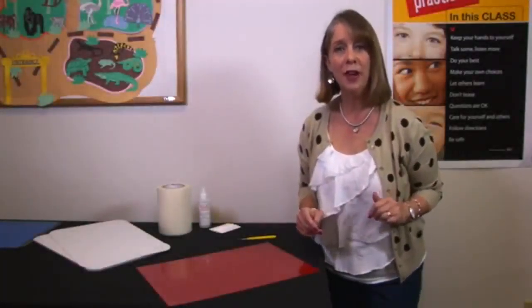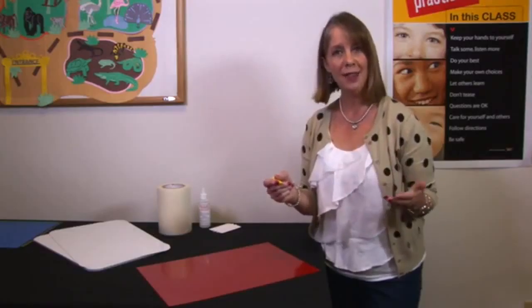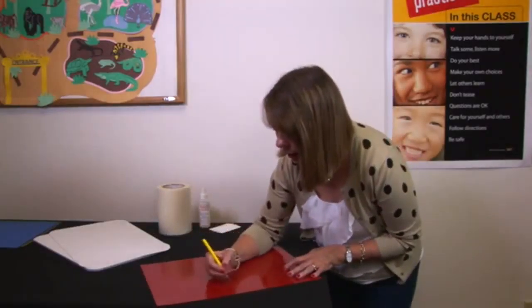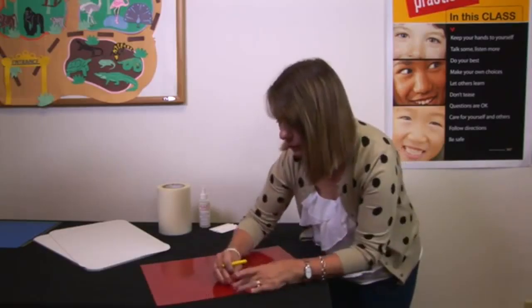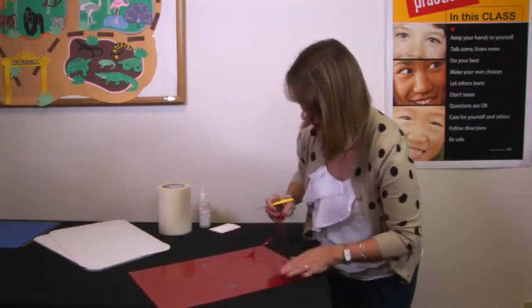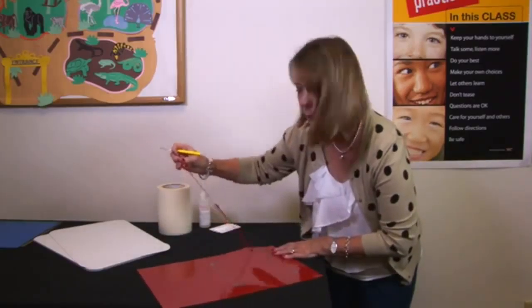The first step to applying the vinyl to a sign is to take your weeding tool and weed the excess vinyl. It's a good practice to weed the object boxes first and then the outer perimeter. And as you lift off the vinyl, be sure to lift it up and away.